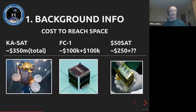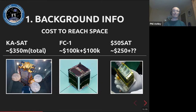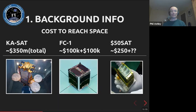Go down to a PocketQube — there's the $50SAT, which actually cost $250 because they built more than one; the parts for a single one cost about $50. Launch costs weren't published because they went into a rideshare with another university project. It's getting cheaper and smaller and easier, and all of these are now being built with off-the-shelf parts — not fancy silicon-on-sapphire chips costing tens of thousands each, but just buying stuff from RS Components, shoving it in a satellite, and launching it.